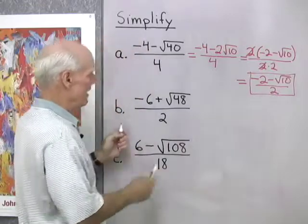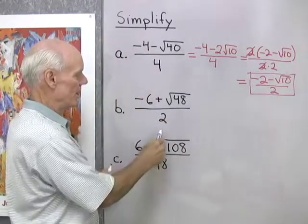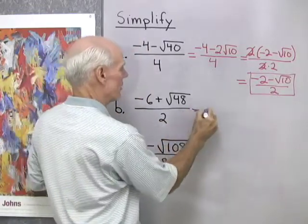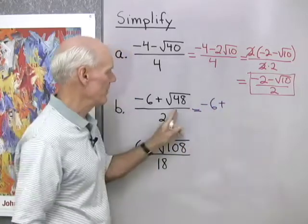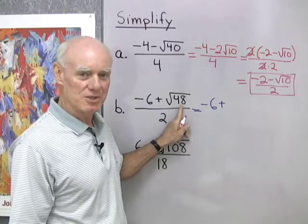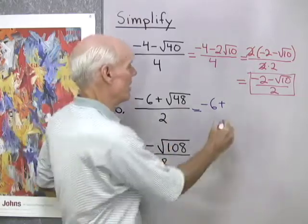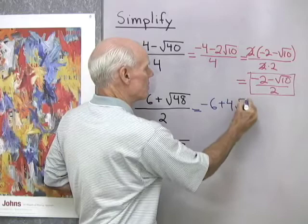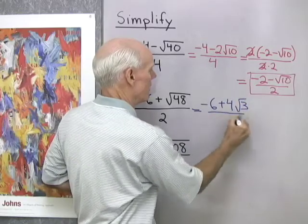Okay, here's another problem. I have negative 6 plus square root 48 over 2, so that would be negative 6 plus, okay, 48 is going to be 16 times 3. Square root 16 will be 4, so I'm going to have 4 square root 3 all divided by 2.